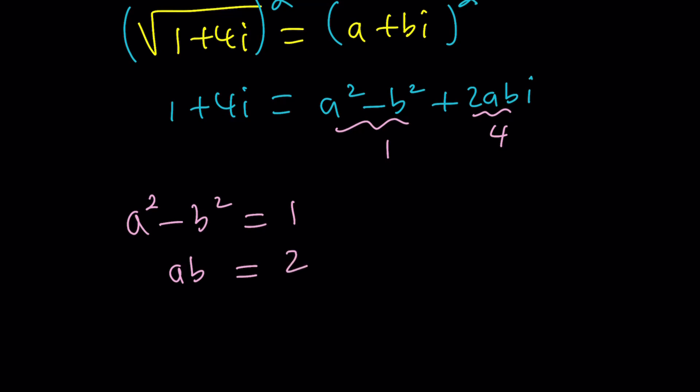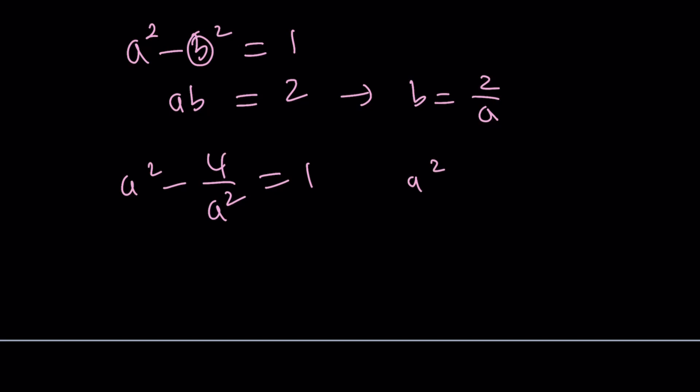Now from here, however you want to solve it, there's so many ways to approach it, but I can isolate b as 2 over a. Replace this b with 2 over a and get 4 over a squared equals 1, and then kind of set a squared equals to c.